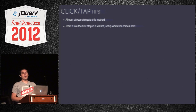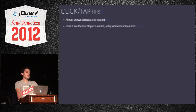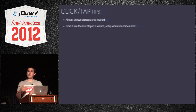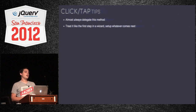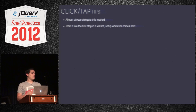Some tips: when dealing with click and tap events, almost always delegate this method — bind it to a delegated event and let that fire when they interact with your page. Treat this like the first step in a wizard. If they're clicking on an item to show a dialogue, the very next step they're about to see is that dialogue, so set it up and make sure everything's ready. If the content they're showing has social widgets or potentially slow page-load elements, don't show it until they go to show the content.